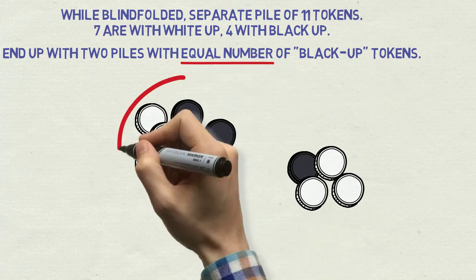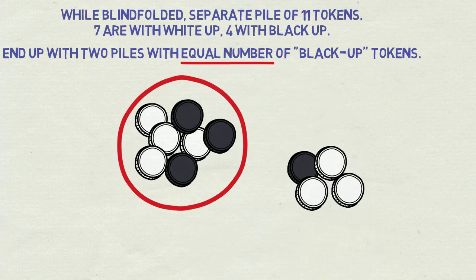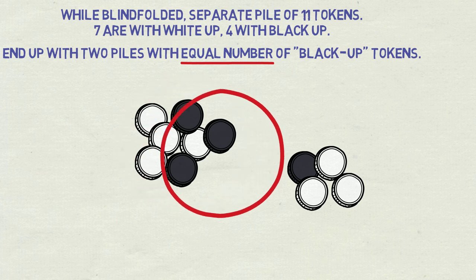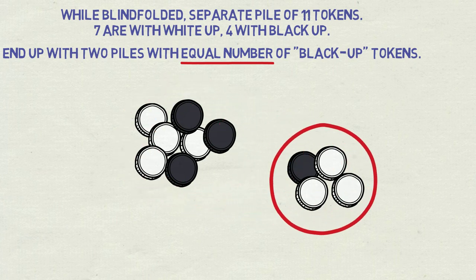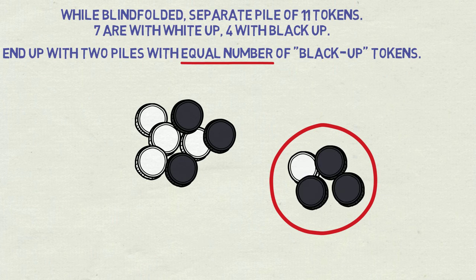And so you will quickly notice that if you turn all tokens in the pile of 7, you will end up with equal number of white up tokens in both piles. And accordingly, if you turn all tokens in the pile of 4, you will end up with equal number of black up tokens, regardless of the original setup.